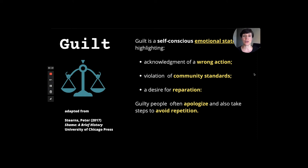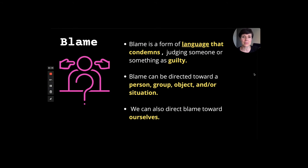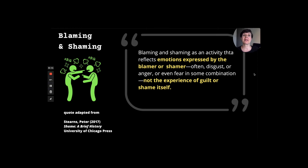The way I describe the difference between shame and guilt to students is: a person who feels guilty says, 'I can't believe I did that,' while a person who feels ashamed says, 'I can't believe I am that' — the latter is internalized. Blame is a form of language about condemnation — judging somebody as guilty — and can be directed toward a person, group, object, or situation. Blaming and shaming generally has to do with emotions expressed by the person doing the blaming rather than the experience of guilt or shame itself.